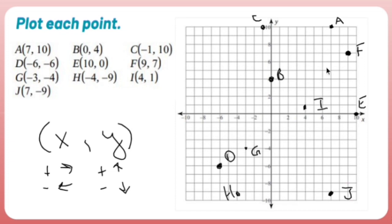So quadrant 1 is pretty well represented. Quadrant 2, not so much. Quadrant 3 has quite a few dots. Quadrant 4, not so much. There's a dot on the x-axis and a dot on the y-axis. That's how you graph points on a coordinate plane, also known as a Cartesian plane.